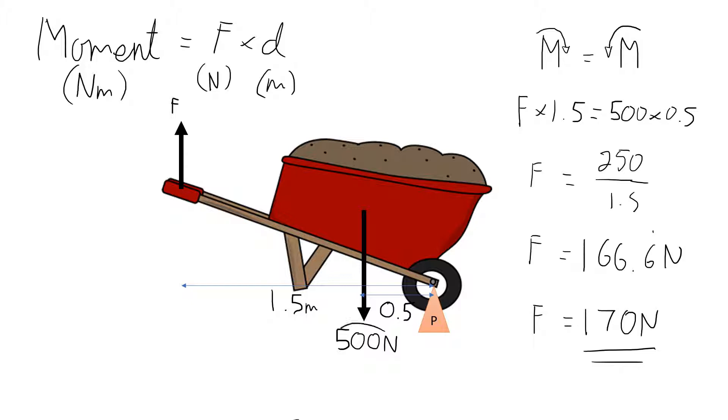So instead of having to carry around 500 newtons in your arms, you only have to apply 170 newtons if you're using a wheelbarrow. So fundamentally, it comes down to this. The moments clockwise and anticlockwise need to be equal in order to lift this wheelbarrow.